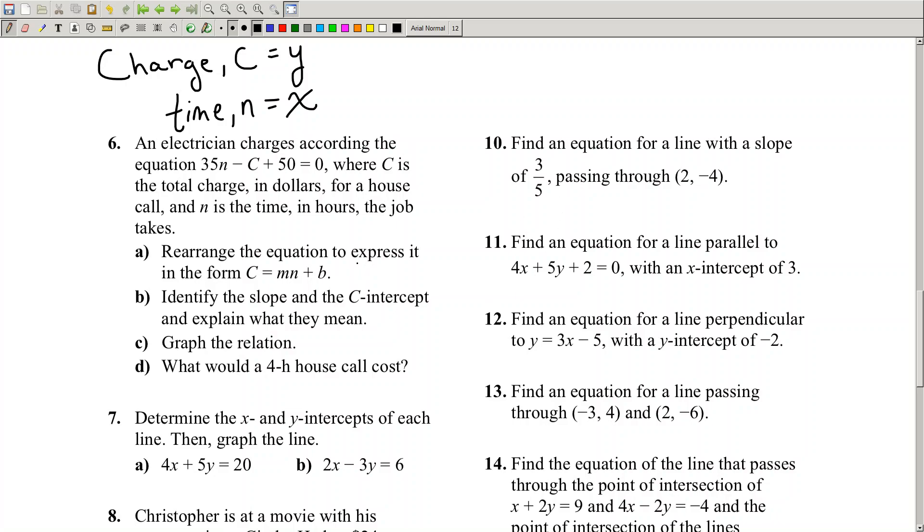So now, all I'm asking you to do in part A is isolate for C. In other words, isolate for y. What this means is this is in y equals mx plus b form. So it wants you to take this and isolate it into y equals mx plus b form. All I'm going to do is move the y variable, in this case C, over to the other side. And I get C equals to 35n plus 50. And there you go. y equals to mx plus b. I'm already done.